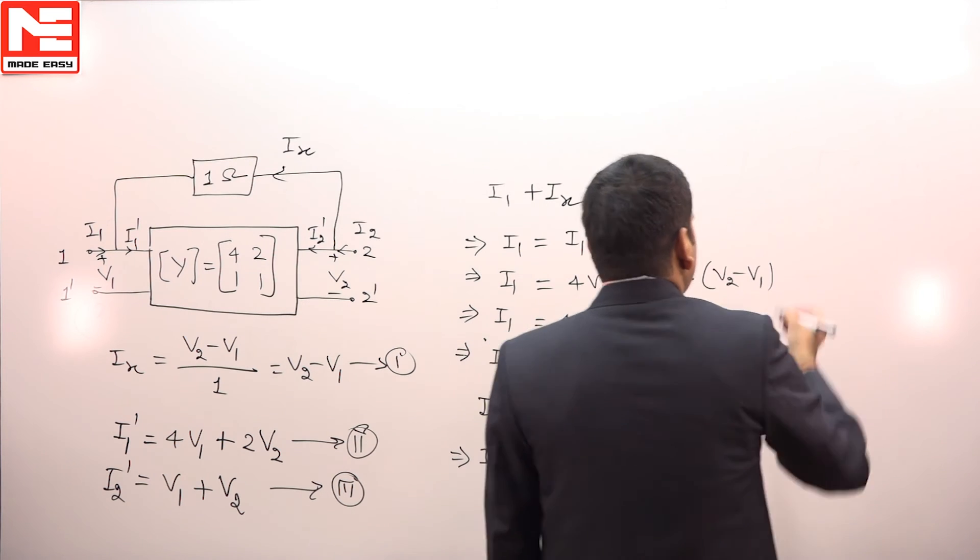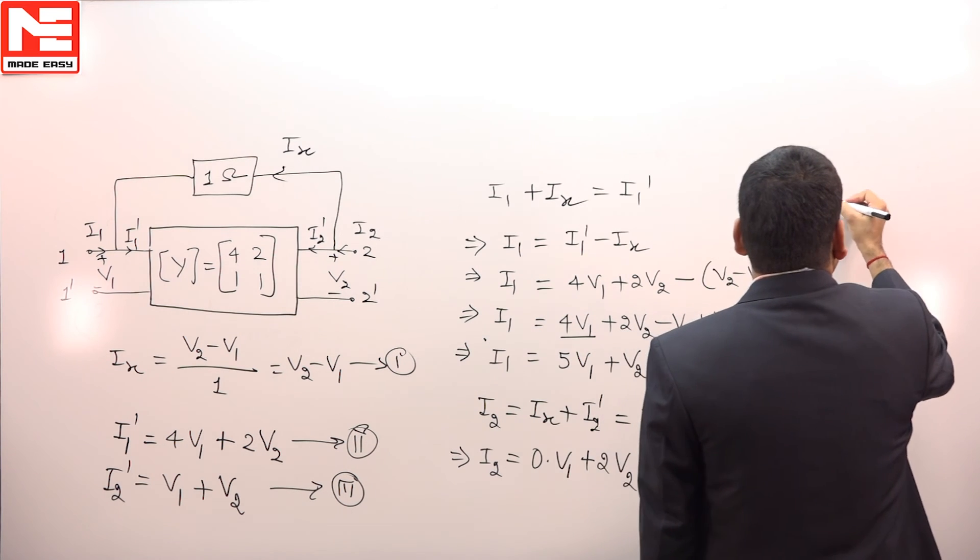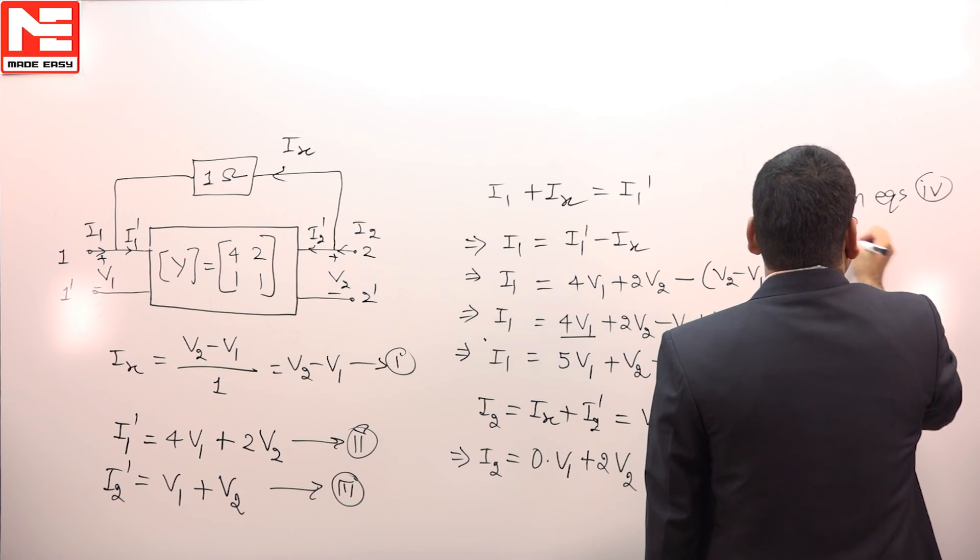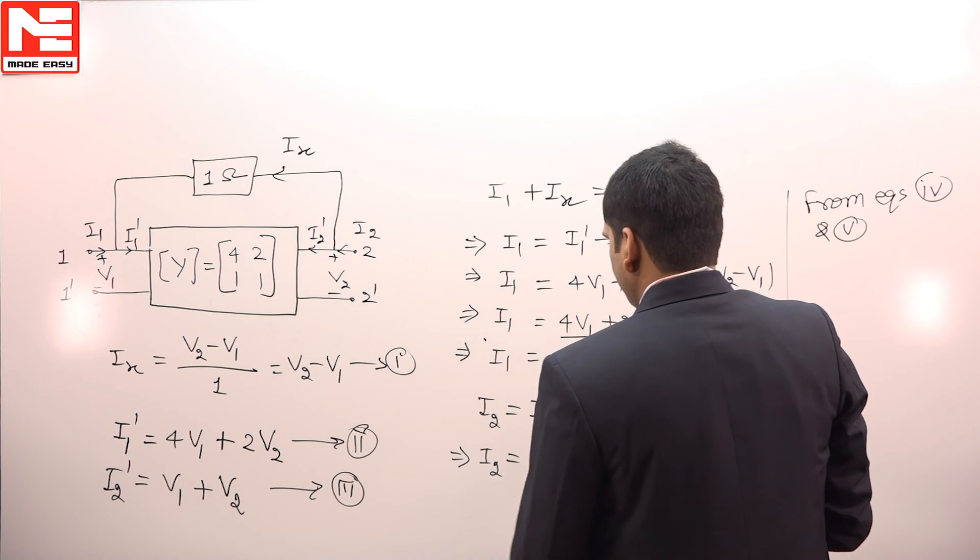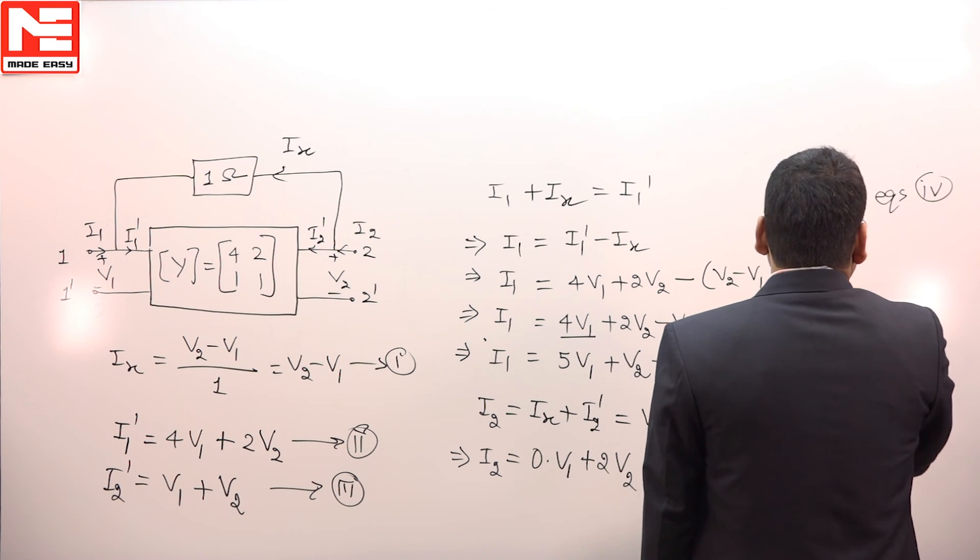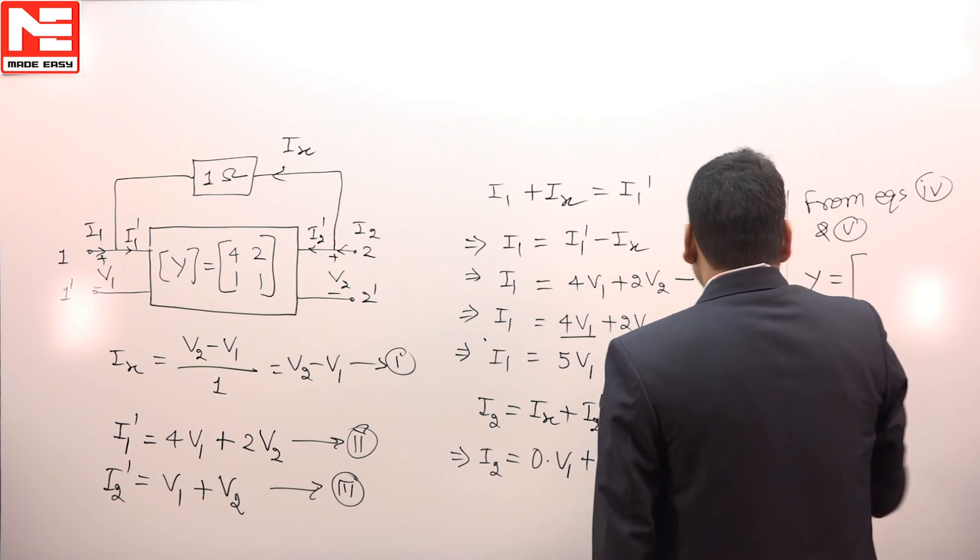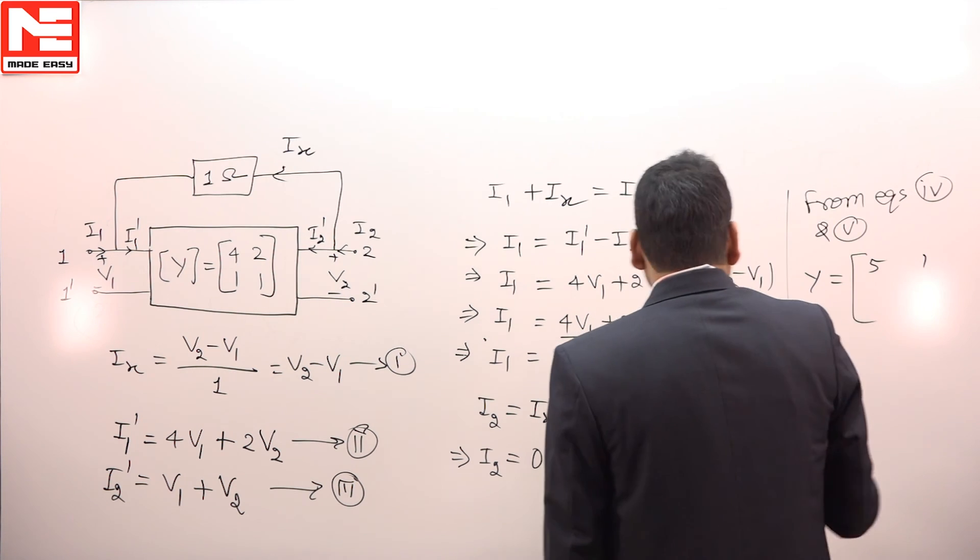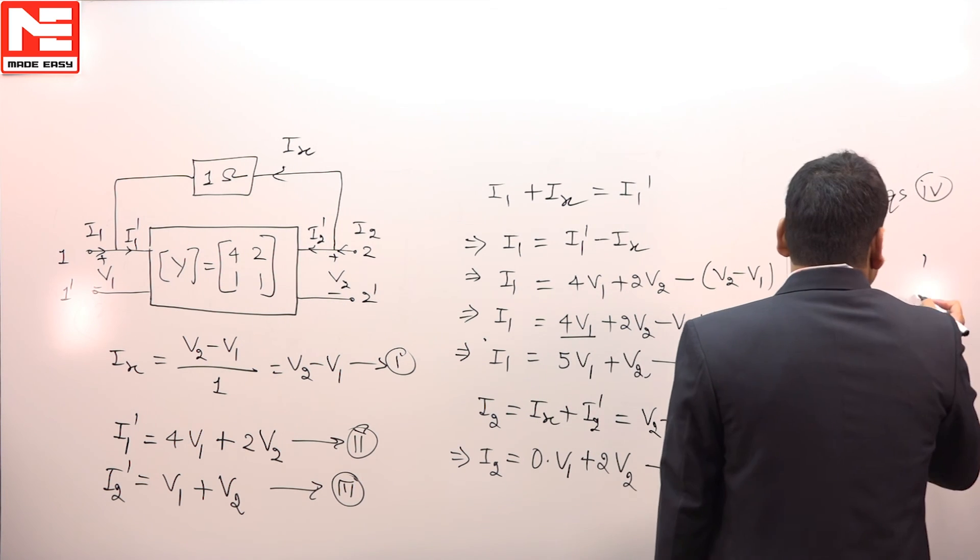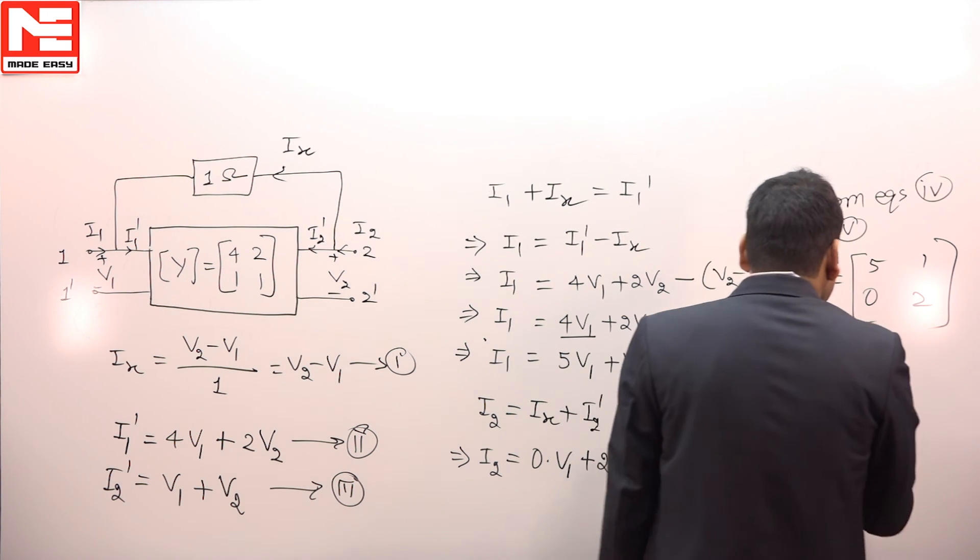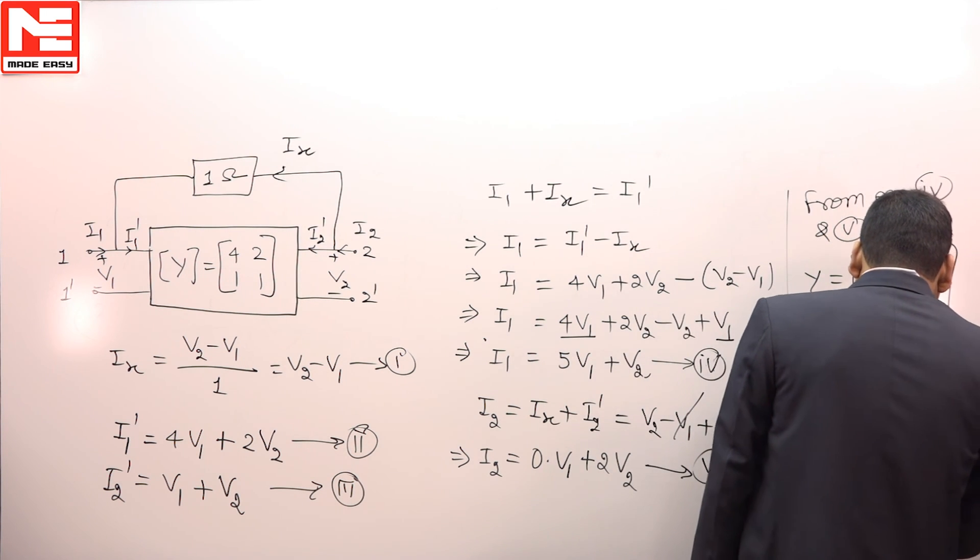From equation 4 and 5, comparing with the standard Y parameter network, i1 equals Y11V1 plus Y12V2. So Y11 is 5, Y12 is 1. Similarly for i2, Y21 is 0 and Y22 is 2. So the answer for this question is 5, 1, 0, 2, which is given in option A. The right choice is option A.